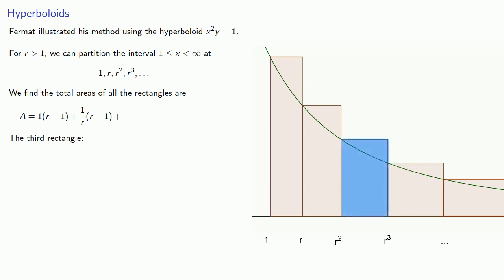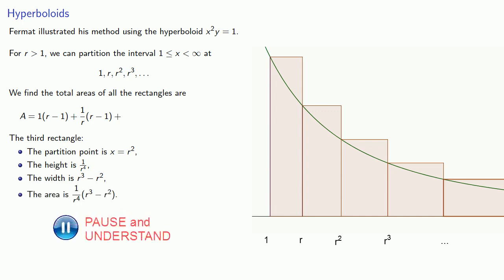How about the third rectangle? The partition point is x equals r squared, and the height is 1 over r to the fourth. The width is r cubed minus r squared. The area, 1 over r to the fourth times r cubed minus r squared, which simplifies, giving us the area of the third rectangle.